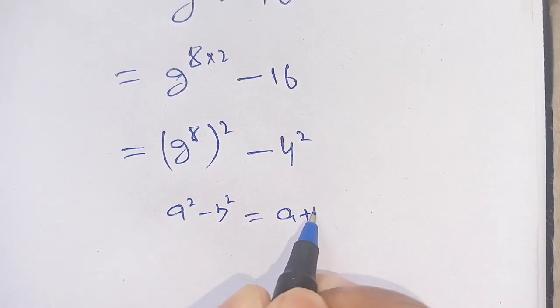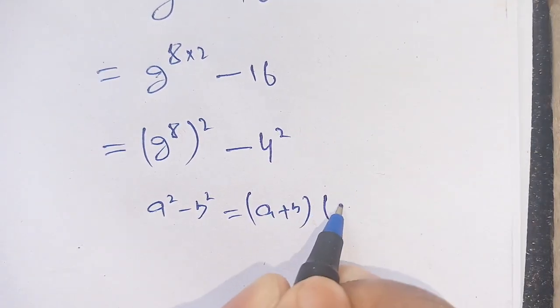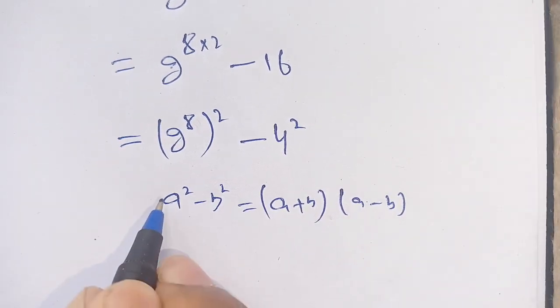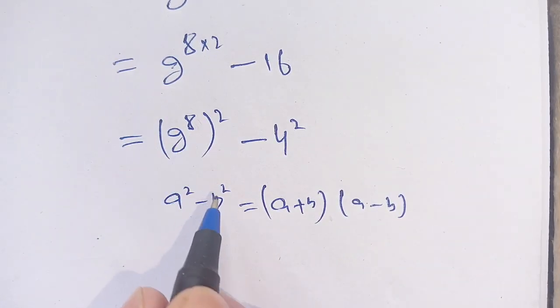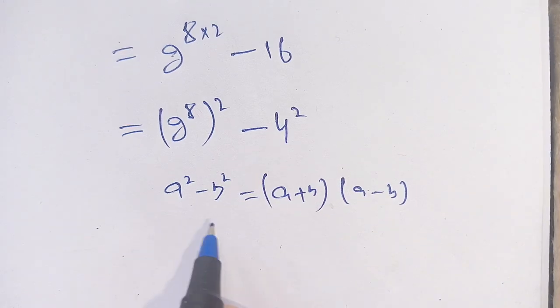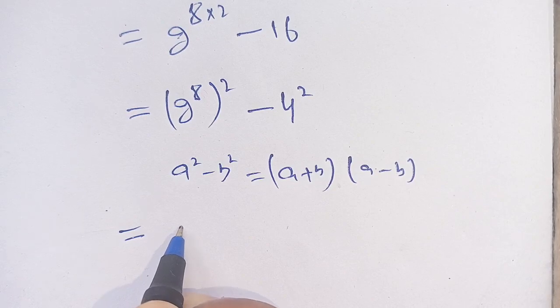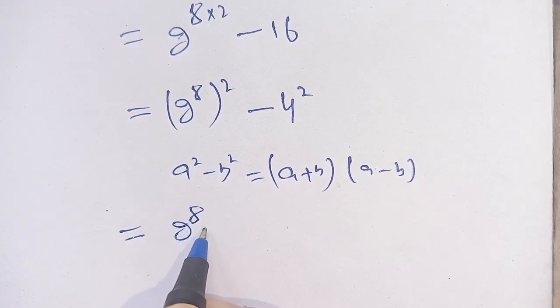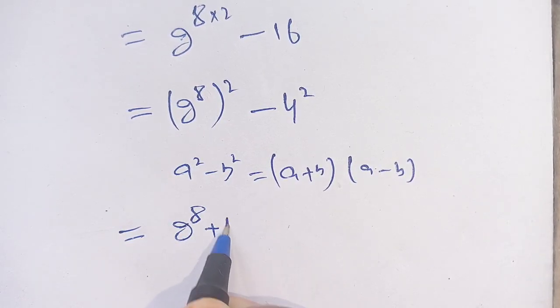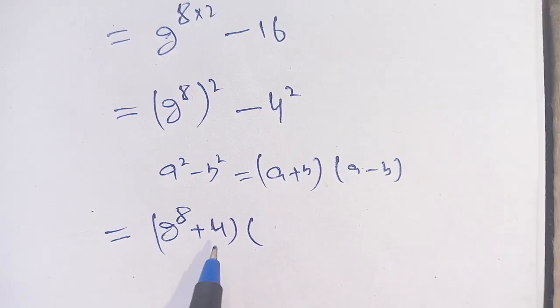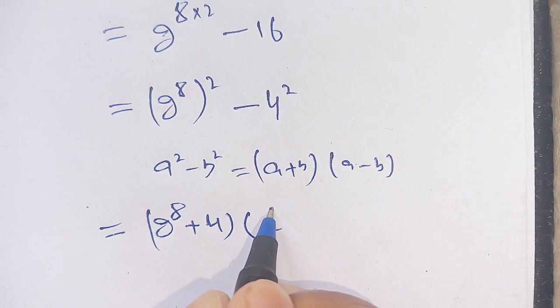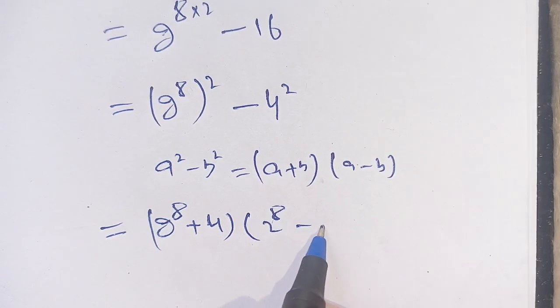Here, a is 2^8 and b is 4. Using this identity, we get (2^8 + 4) times (2^8 - 4).